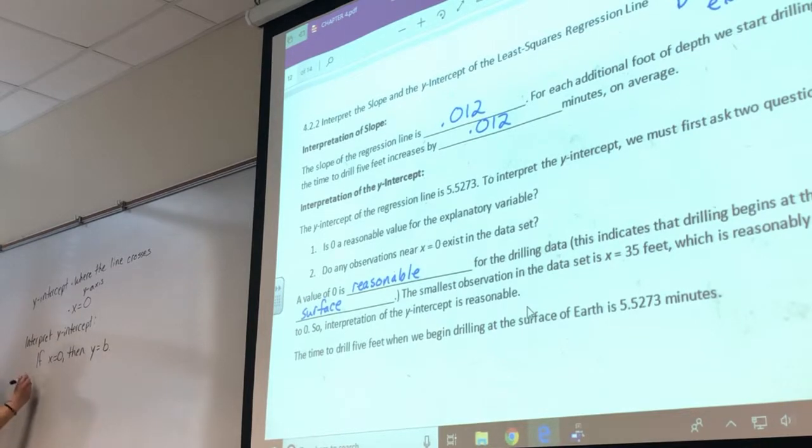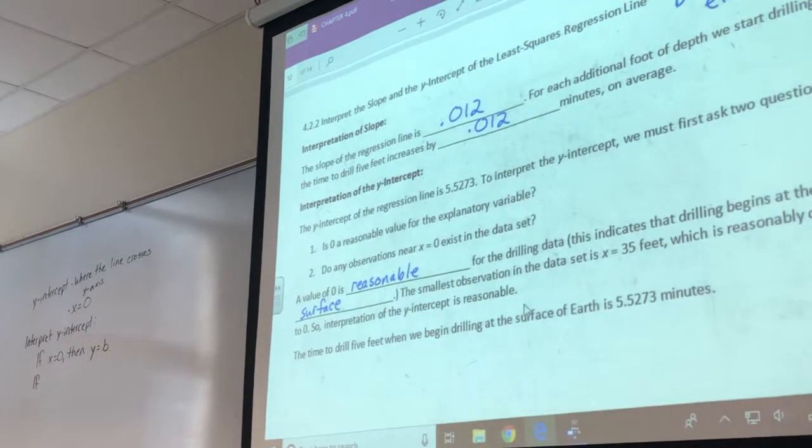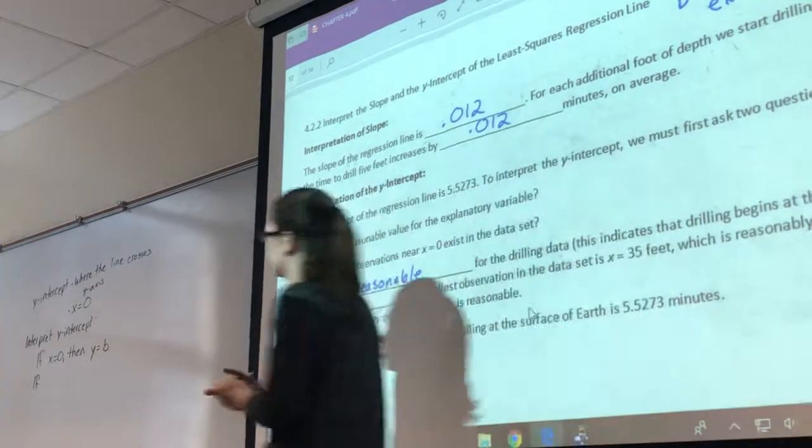So if they ask to interpret the y-intercept, that's just saying if x equals zero, then y equals b, whatever your y-intercept happens to be from your calculator. So in this case, that's why we have to make sure x equals zero makes sense. In this case, it does, so it's okay. So for this one, when we're interpreting the y-intercept, if x equals zero, well, we already talked here. If x equals zero, that means...